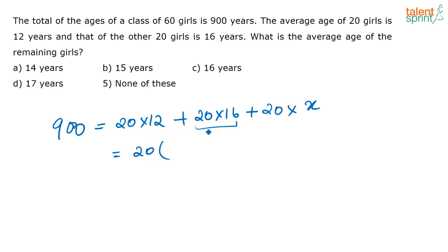Very easy. Take 20 as common, 12 plus 16 is 28. 28 plus x, you have 900 here, 45. So 45 minus 28, x is equal to 17. So option D.